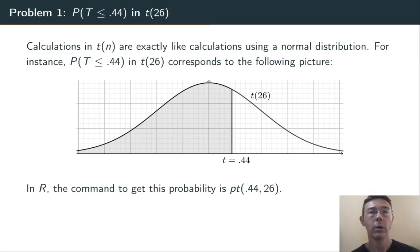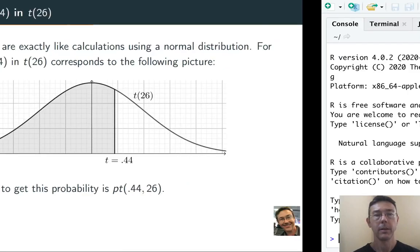It needs two arguments. First of all, the t-value that you're interested in, here 0.44, and secondly, the number of degrees of freedom.